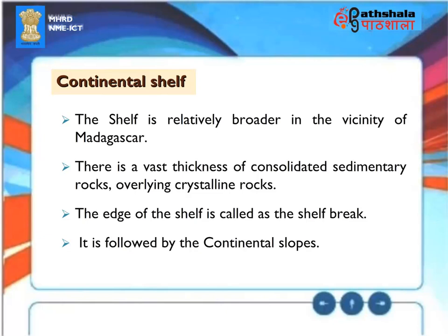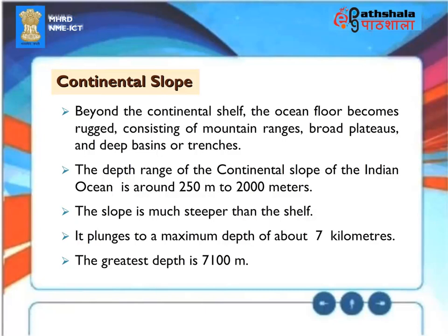Continental slope. Beyond the continental shelf, the ocean floor becomes rugged, consisting of mountain ranges, broad plateaus, and deep basins or trenches. The depth range of the continental slope of the Indian Ocean is around 250 meters to 2,000 meters. The slope is much steeper than the shelf. It plunges to a maximum depth of about 7 kilometers. The greatest depth is 7,100 meters.